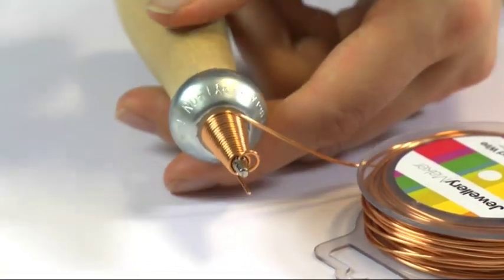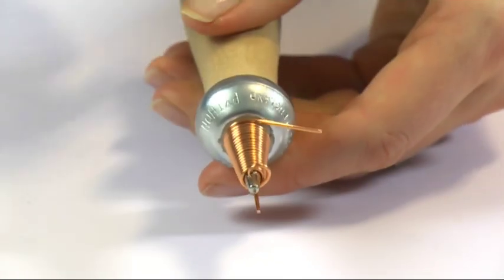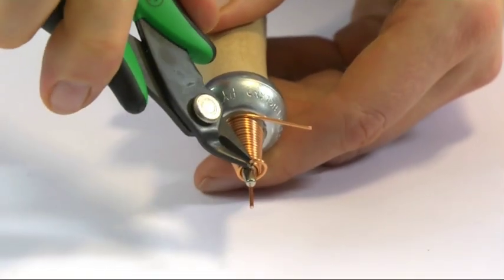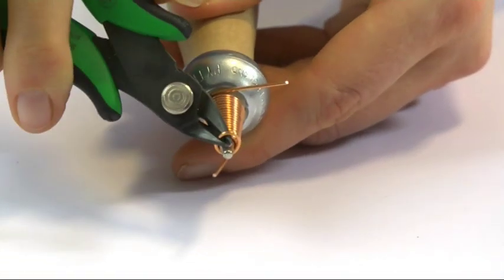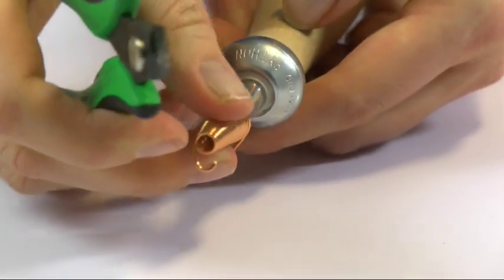Then trim off the wire and cut through the first loop. There we go.